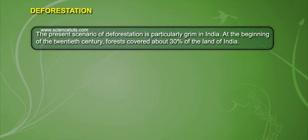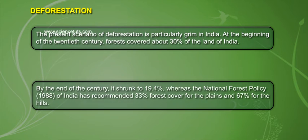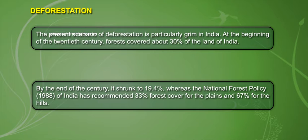At the beginning of the 20th century, forests covered about 30% of the land of India. By the end of the century, it shrunk to 19.4%, whereas the National Forest Policy of India has recommended 33% forest cover for the plains and 67% for the hills.